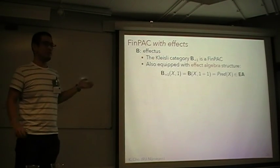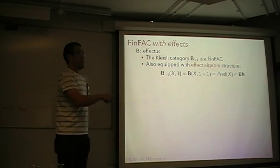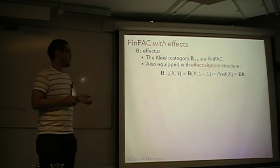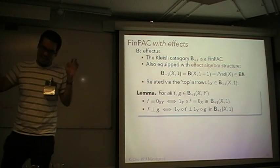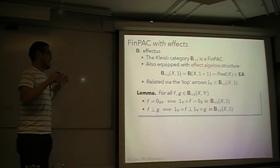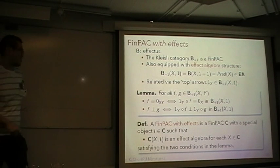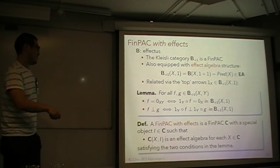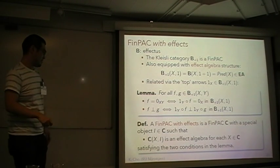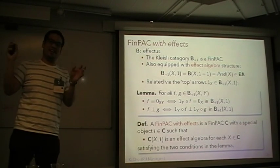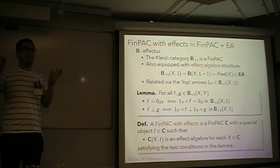The Kleisli category is a finpack, but it also has an effectus-like structure because the hom-set from X to one is an effect algebra — it is the set of predicates. Moreover, the partially additive structure and the effect algebra structure are related by this truth map in this manner. What I call finpacks with effects is: a finpack with a special object I such that each hom-set from X to I is an effect algebra satisfying a condition that relates the partially additive structure and the effect algebra structure. Loosely speaking, finpacks with effects is a finpack plus an effect algebra.